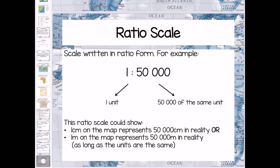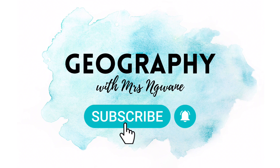The last type is a ratio scale — this is the scale we use most to work out distance. It's written in ratio form and with a ratio scale we don't need to put the units of measurement in, because it means one unit represents 50,000 of the same unit. For example, it could mean one centimeter on the map represents 50,000 centimeters in reality, or one meter represents 50,000 meters — as long as the units are the same. I hope this video has been helpful. Please let me know in the comments if you have any specific topics you'd like me to cover, and I'll see you next time.